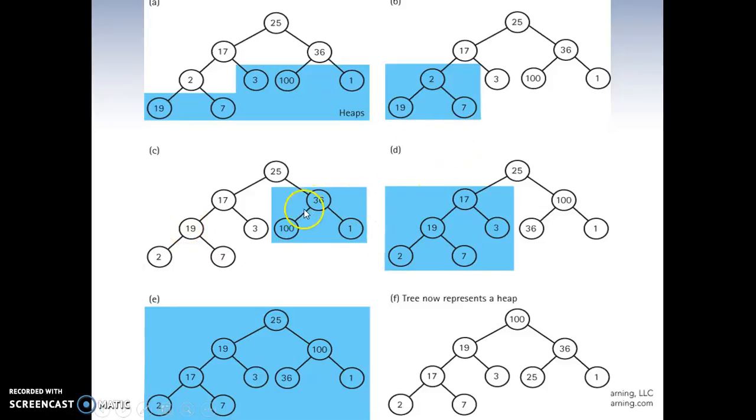And look at the same at the right subtree. 100 is the largest. So 100 has to go up. So swap with 36. 19 swap with 2.